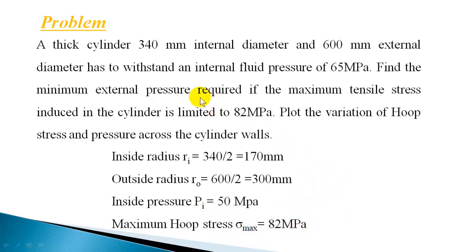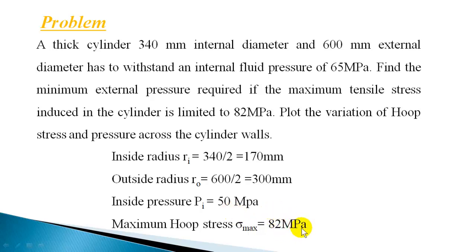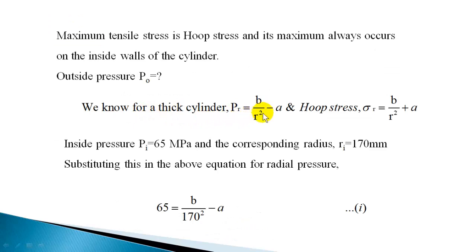We are asked to find out the external pressure. External pressure is not zero. We have sufficient data: inside pressure is given, inside hoop stress is given — one pressure value and one hoop stress value are known. So we have two equations and two unknowns, A and B, which we can solve. We know for a thick cylinder the pressure equation is B/R² minus A, and the hoop stress equation is B/R² plus A.